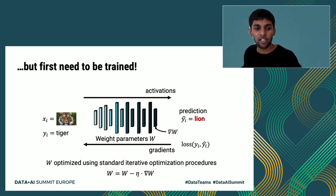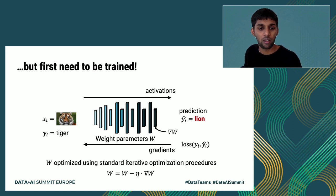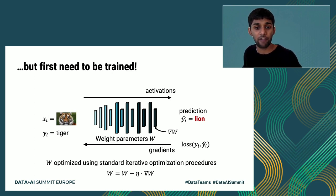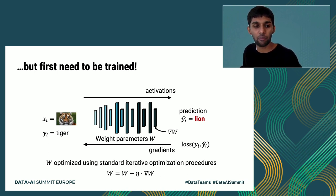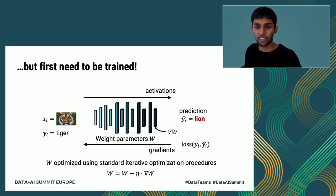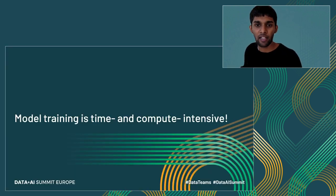A forward pass through the model generates intermediate activations and a prediction. This prediction might be incorrect — for example, the model might initially think a picture of a lion is, in fact, a tiger. Errors between the predictions and the true labels are backpropagated through the model in a backward pass, generating weight gradients that are used to update the model. Training models requires many passes through the input dataset, making this entire process extremely time and compute intensive.